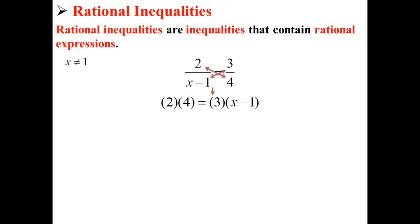Next we solve, so first we cross multiply to get 2 times 4 is equal to 3 times x minus 1. Then we distribute to get 8 is equal to 3x minus 3. We add 3 to get 11 equals 3x, and then we divide by 3 to find that x is equal to 11 over 3.